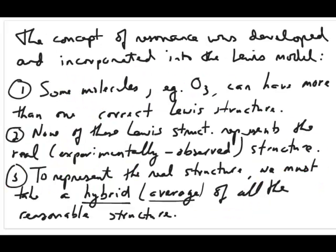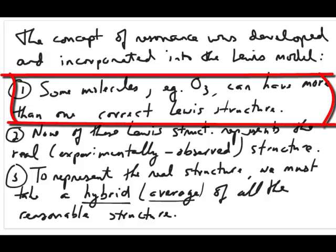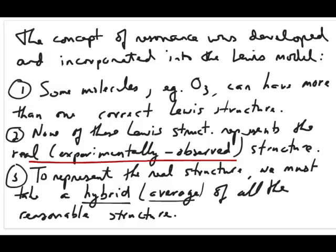So the concept of resonance was then developed and incorporated into the Lewis model to account for molecules that have more than one Lewis structure. The idea is the following: some molecules, for example ozone, can have more than one correct Lewis structure. When we look at the actual structure, we notice that these theoretically predicted Lewis structures don't fit what we see experimentally. So in order to take the Lewis structures and make them represent the real structure, what we have to do is take a hybrid or an average of all the reasonable Lewis structures that we can draw for that molecule.